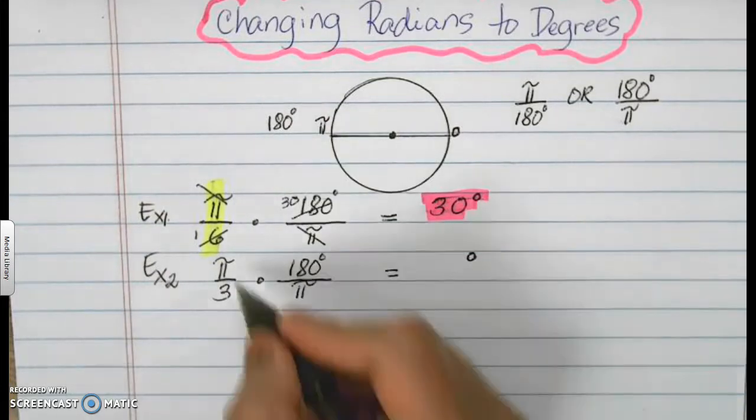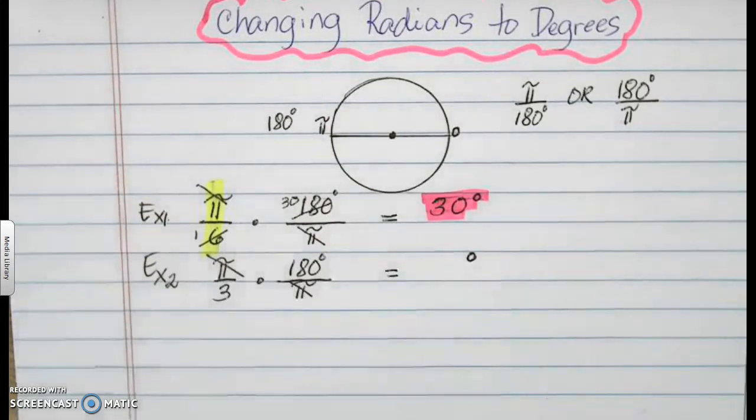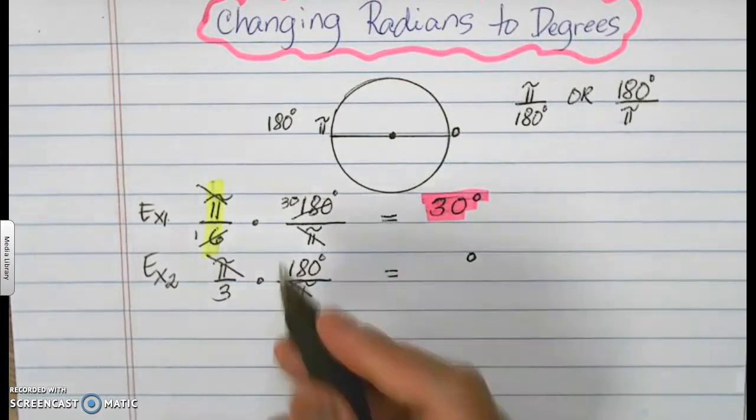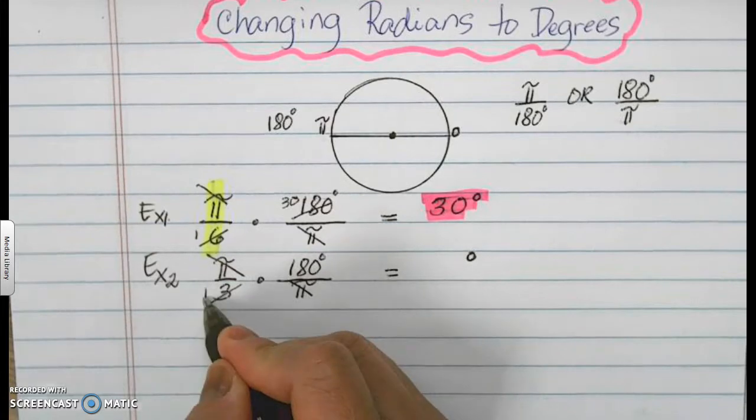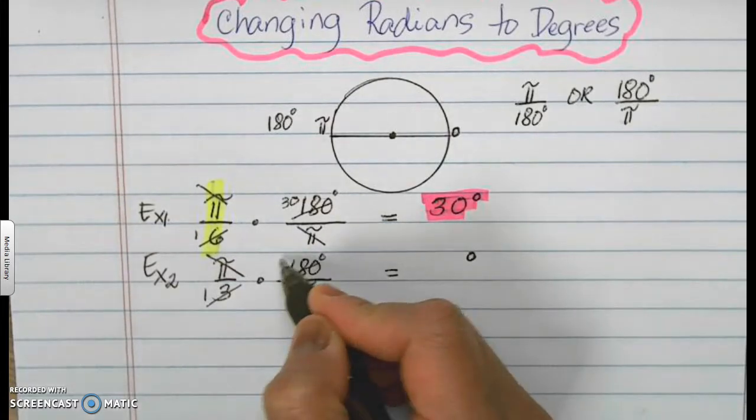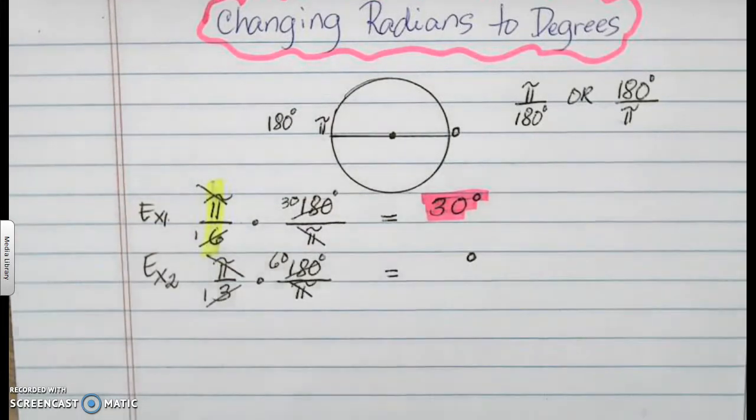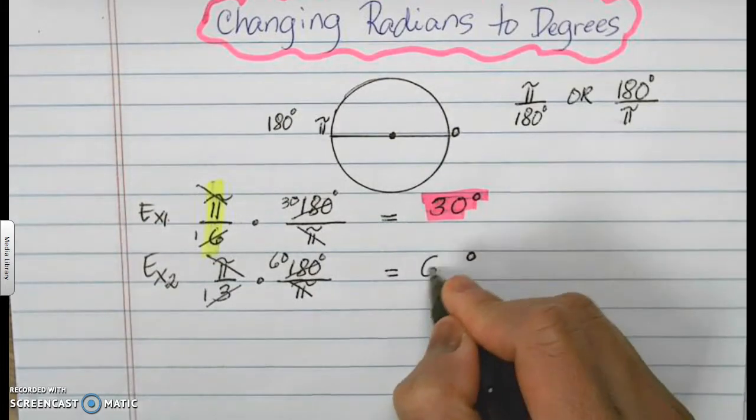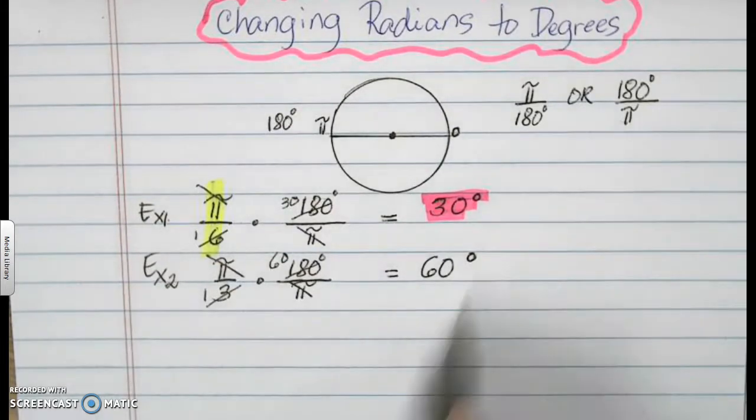This cancels out. So I now just have degrees, which I had placed there. 180 and 3 are both divisible by 3. So I divide this by 3, it's a 1. I divide this by 3, it's 60. Therefore, my degrees is 60 degrees or 60 over 1 degrees, which is the same as 60 degrees.